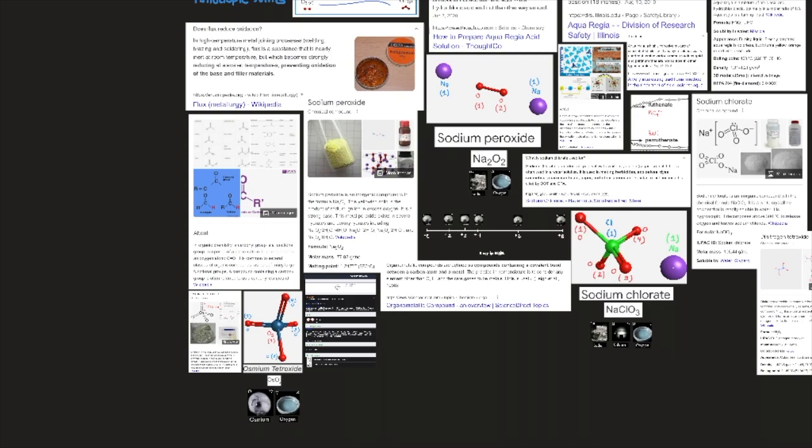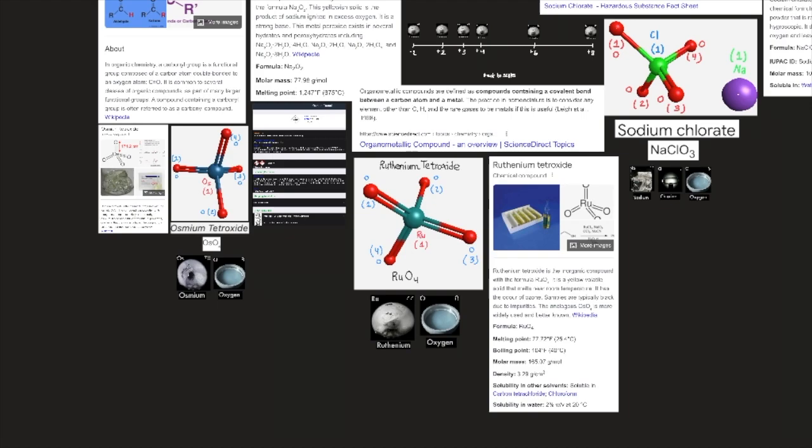Ruthenium has no known biological role. Ruthenium tetroxide is highly toxic. The negative 2 and 0 through plus 8 states are known, but plus 2, plus 3, plus 4, plus 6, and plus 8 are most important.